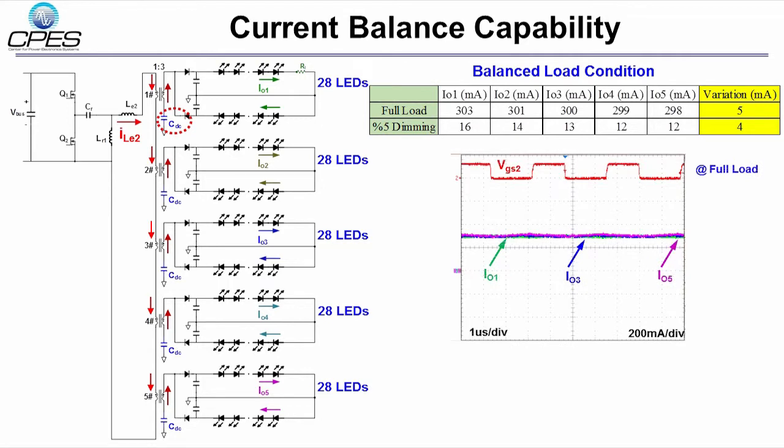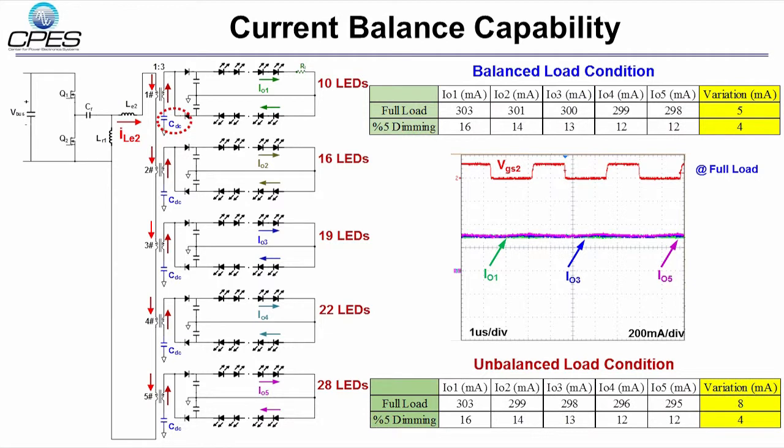When we look at the waveforms for the output current of three LED strings, they are almost the same. The other example is under the unbalanced load condition. The LED number of each string varies from 10 to 28. Even though the load variation is very huge, the current variation among these LED strings is about 4 to 8 mA. So the current balance capability of this two-stage LED driver is very good.